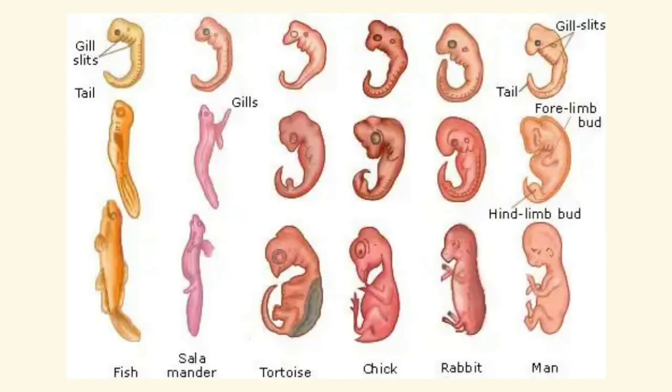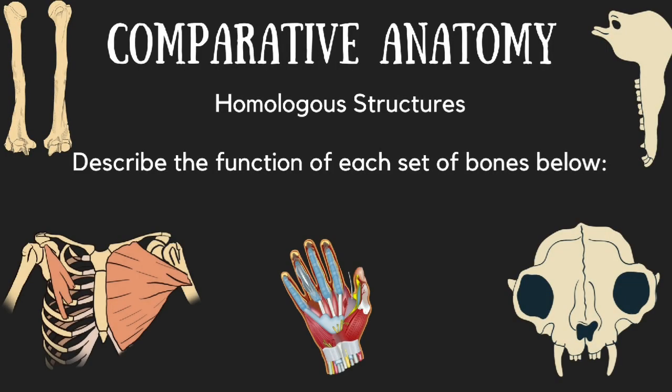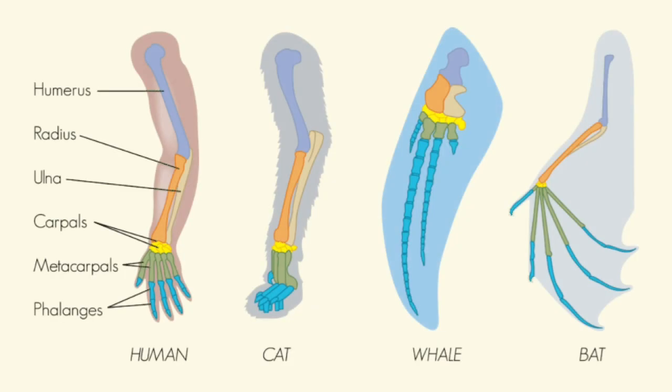The embryos of species such as salamanders, lizards, birds, cats, and humans are similar during the first stage of their embryonic development, and have several homologous structures that are not present when the organisms are adults.